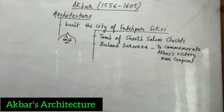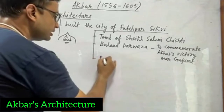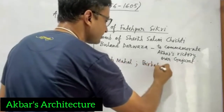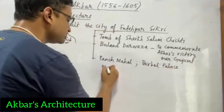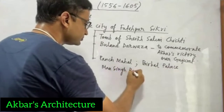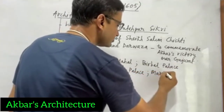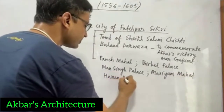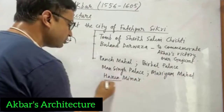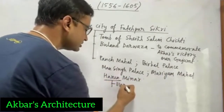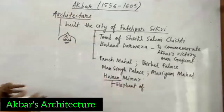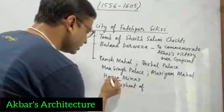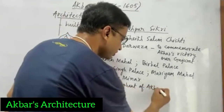Apart from that, there are a number of palaces located in Fatehpur Sikri — for instance, the Panch Mahal, the Birbal Palace, the Manson Palace, Mariam Mahal. We also have Hiran Minar; Harun was the elephant of Akbar, and in his memory Akbar built this minar, known as Hiran Minar.